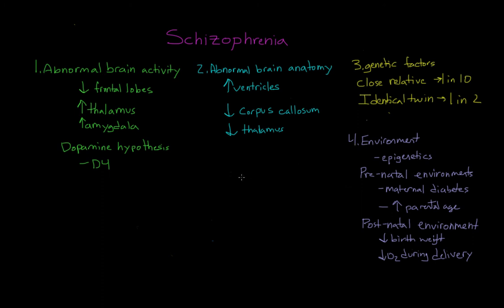One additional environmental trigger worth discussing is viral infections — specifically, infections that a woman gets while she is pregnant. There's been a lot of interesting research showing that schizophrenia might be triggered by the flu. In particular, researchers have found an increase in schizophrenia in the children of women who had the flu while pregnant. This has important public health implications: it may make it even more important for women to get a flu shot while pregnant, and to ensure that the people around them are vaccinated as well.